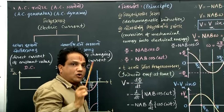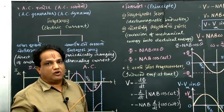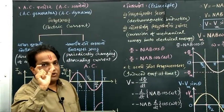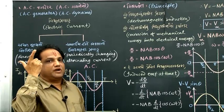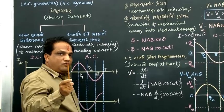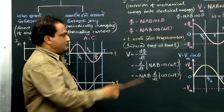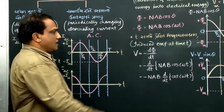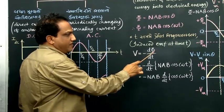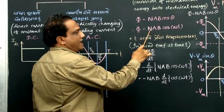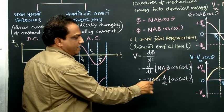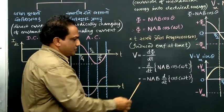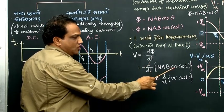As the magnetic flux linked with the coil keeps changing continuously, from electromagnetic induction we know that whenever there is a change in magnetic flux linked with any coil, some EMF gets induced across the two ends of that coil. That induced EMF is V. From Faraday's law of electromagnetic induction: V = −dΦ/dt. Mathematically, V = −d/dt of Φ. The value of Φ is NAB cos(ωt), so V = −d/dt [NAB cos(ωt)].